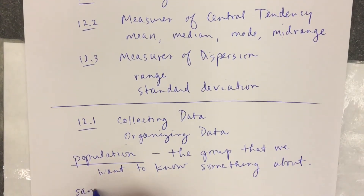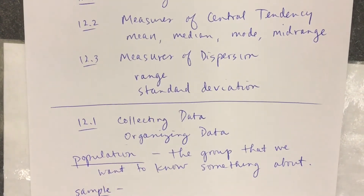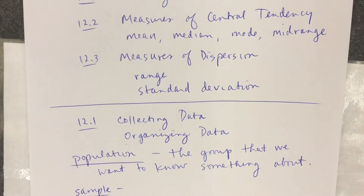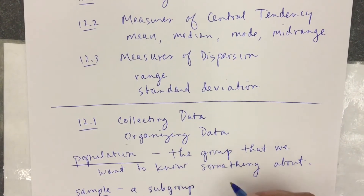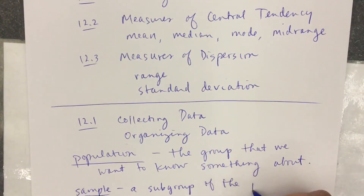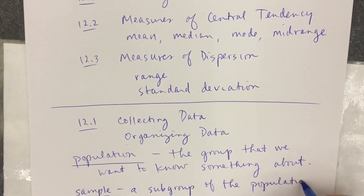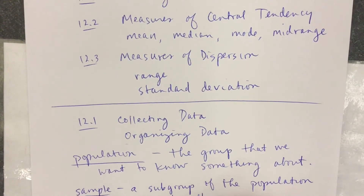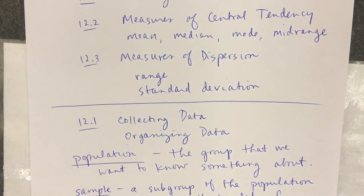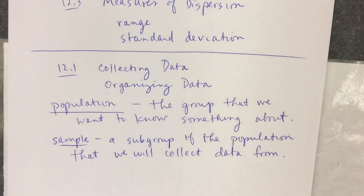Another word we'll use is sample. A sample is a subgroup of the population that we're going to collect data from. It could be the entire population — that would still be a subgroup. So the first thing we look at is what makes a good data collection — what makes a good sample?